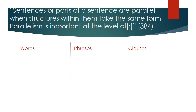Let's start with the book's definition of parallelism. The book says that sentences or parts of a sentence are parallel when structures within them take the same form. Parallelism is important at the level of words, phrases, and clauses. As we go up the line, we'll talk about each and they'll get more complicated.